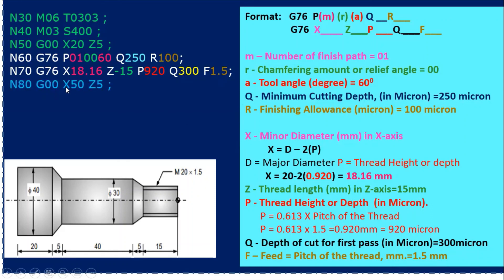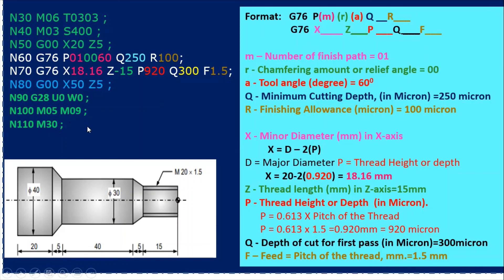After the threading operation, the tool moves away from the component to X50. Then G28 U0 W0 moves the tool to its home or reference position. M05 stops the spindle, M09 turns the coolant off, and M30 is program end and tape rewind, meaning the machine is ready for the next job. Always remember to write the end-of-block semicolon at every line. So in this way we have used the three canned cycles: G70, G71, and G76. I hope you understood the program — thank you friends.